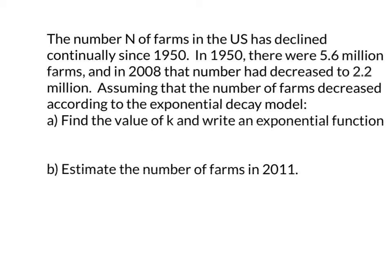Last example: the number of farms in the U.S. has declined continually since 1950. In 1950 there were 5.6 million farms, and in 2008 that number had decreased to 2.2 million. Assuming exponential decay, find the value of k and write the function. So we set up: 2.2 equals 5.6 times e to the negative k·t.